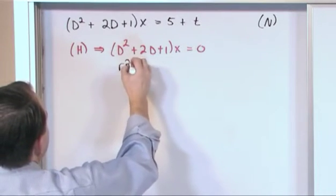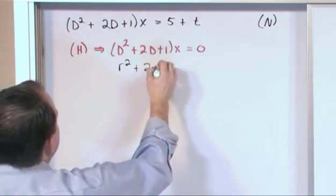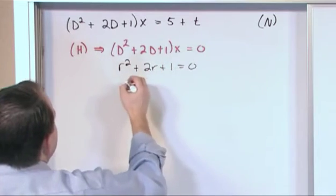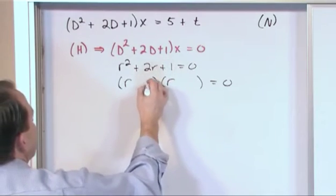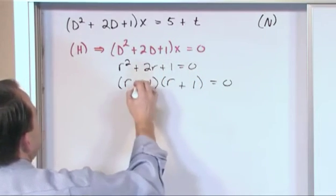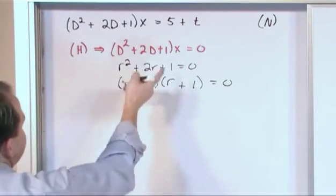We just rewrite it in terms of this little polynomial, r squared plus two r plus one equals zero. We can easily factor this. We'll have r plus one times r plus one. That's pretty simple, right? It just factors this guy.